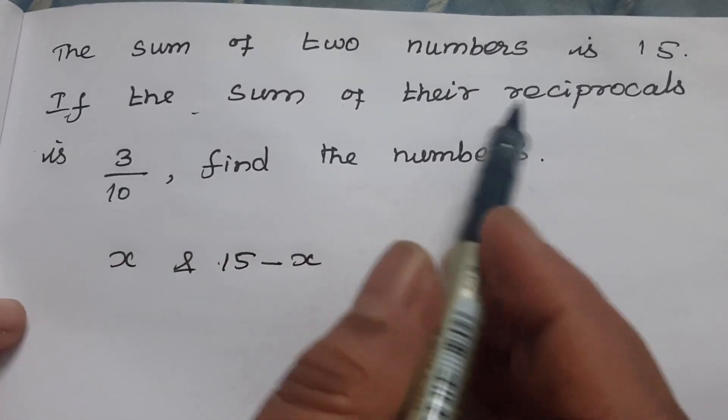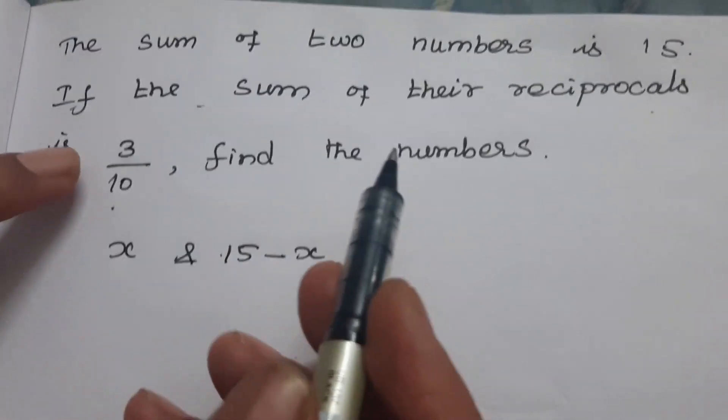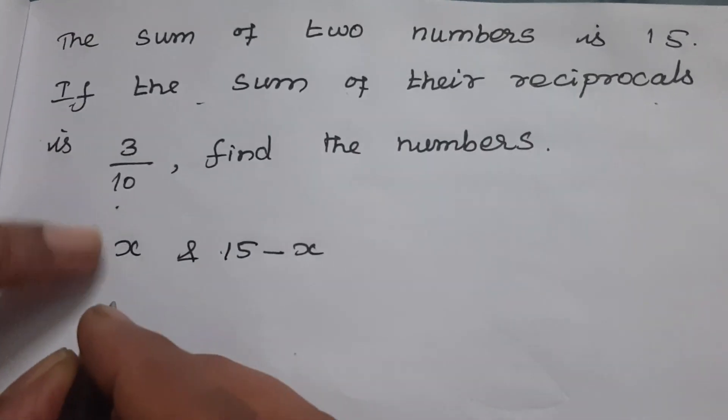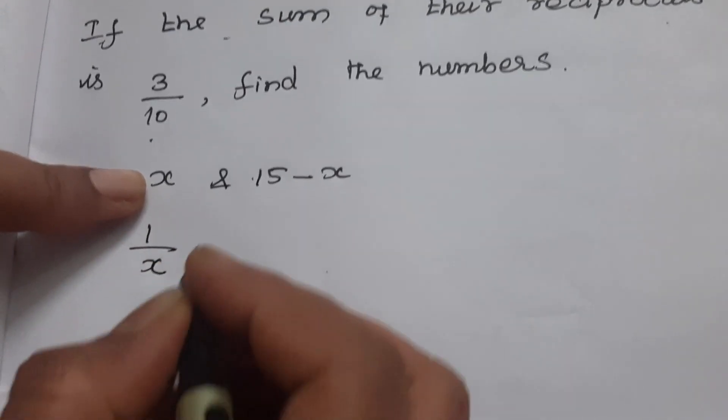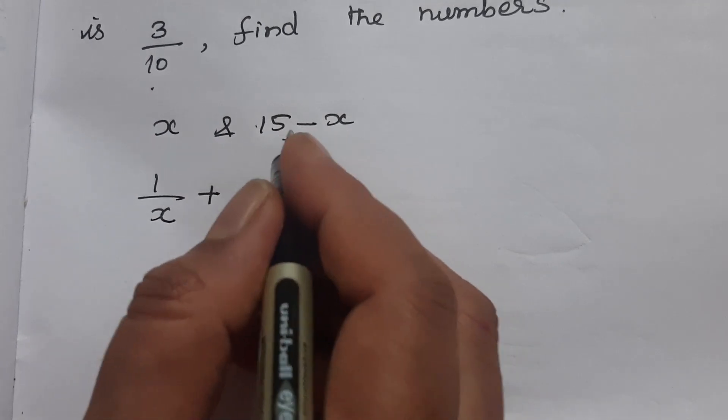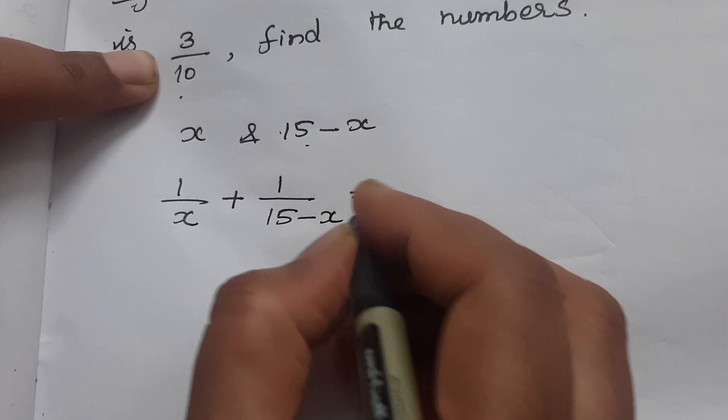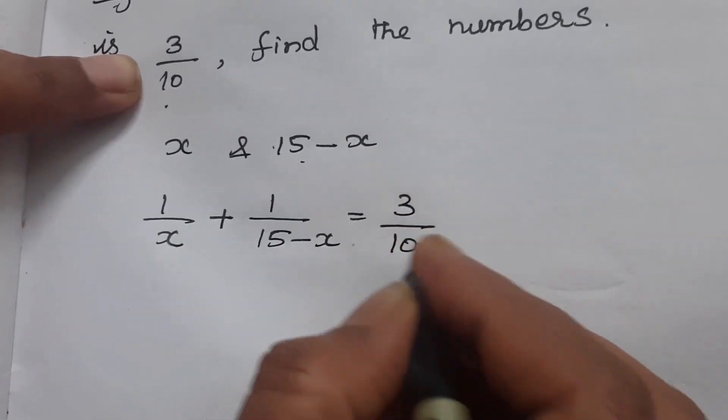Next, the sum of their reciprocals is 3 by 10. So 1 by x plus 1 by 15 minus x equals 3 by 10.